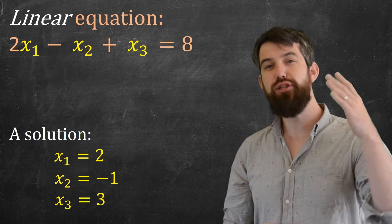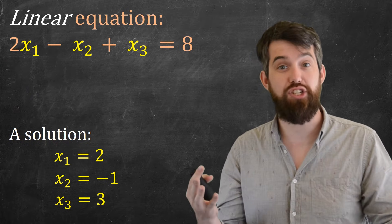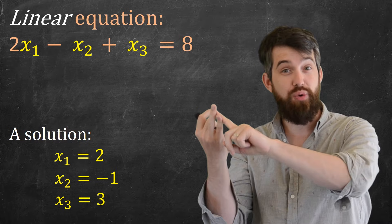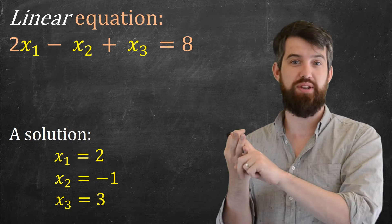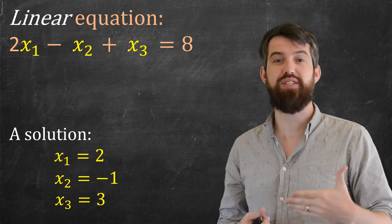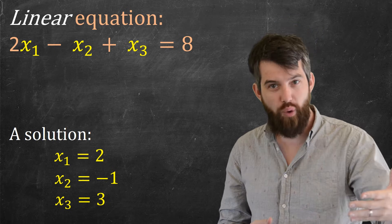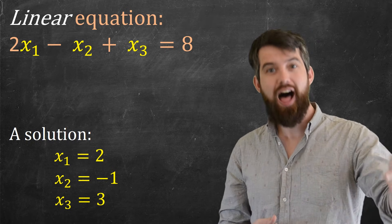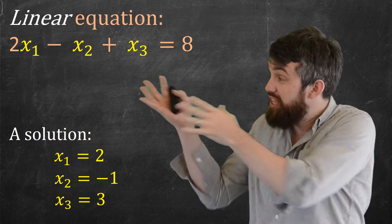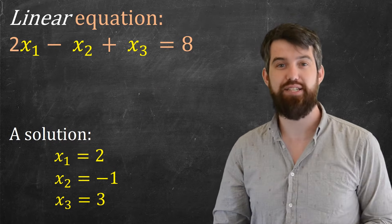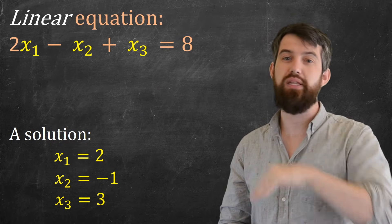Then, a solution to a linear equation is just me telling you what the x1, the x2, and the x3 values are going to be. If I specify some list of numbers, for example, here 2 times 2 is 4, minus minus 1 is 5, plus 3 is 8. If I plug those numbers into the equation, then it does indeed satisfy it. So that is a solution to a linear equation.